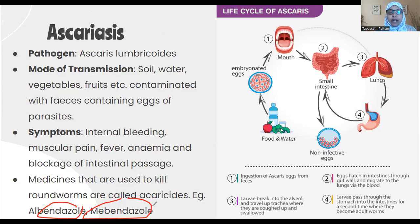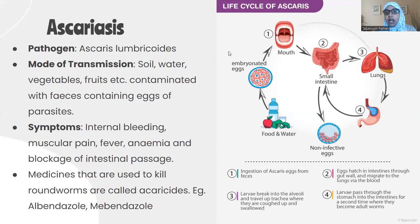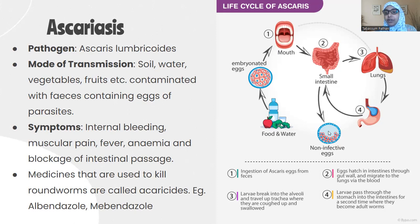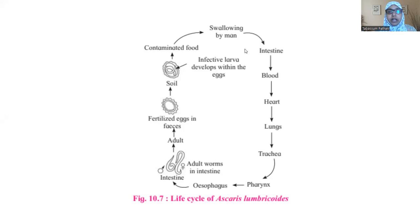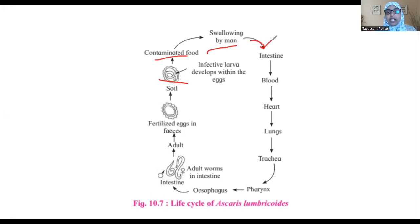Diagnosis involves microscopic examination of the stool, followed by administering these drugs to kill the roundworms in the intestine. Looking at the life cycle: the ingested parasite first attacks the small intestine, then the lungs, and can enter the bloodstream. Contaminated food swallowed by a person reaches the intestine, then through blood reaches the heart and lungs.